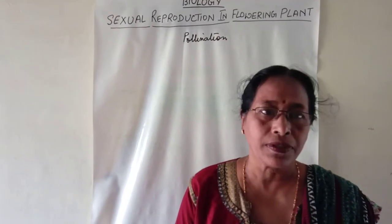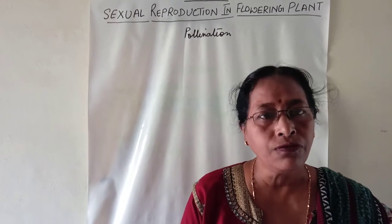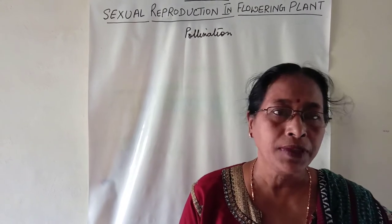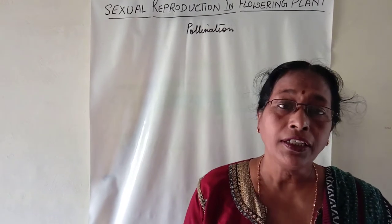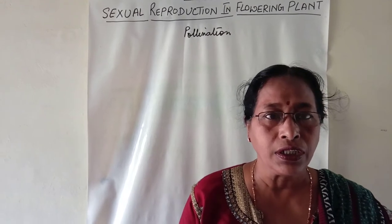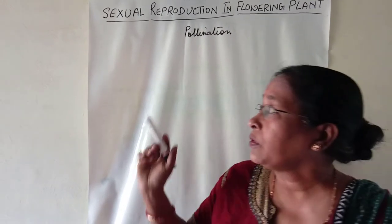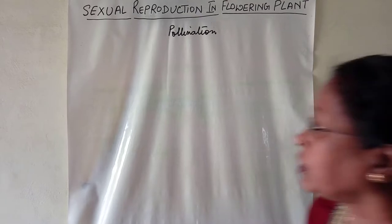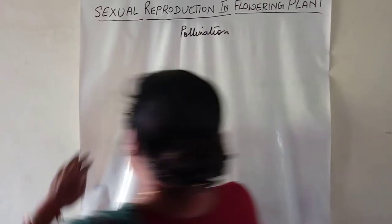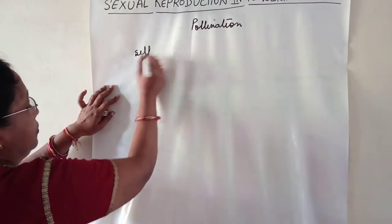In the last class we discussed about pollination and their types. Today we shall discuss about the different forms of adaptation that a plant mechanizes to achieve pollination. We all know that pollination is of two types: self-pollination and cross-pollination.